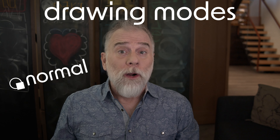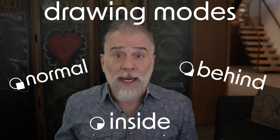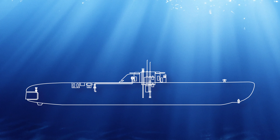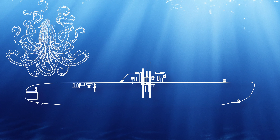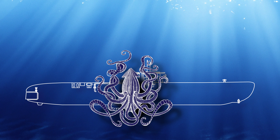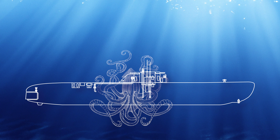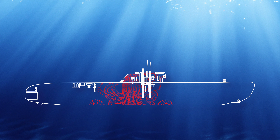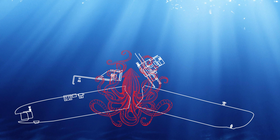Do you know Illustrator? If so, you may know that it provides three so-called drawing modes: Normal, Behind, and Inside. How do they work? Imagine you're in a submarine, and along comes a giant squid. Draw Normal puts the squid in front of the submarine. Draw Behind puts the squid in back of the submarine. Draw Inside puts the squid inside the submarine, which is terrifying for both you and the squid.